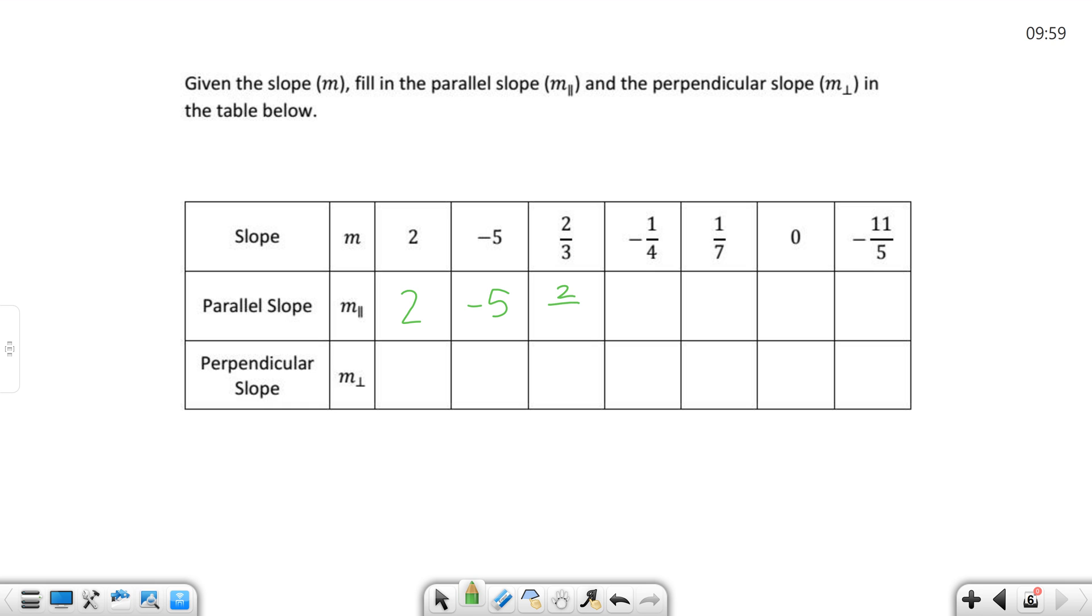What's the parallel slope to two-thirds? Two-thirds. What's the parallel slope to negative one-fourth? Negative one-fourth. If you don't see this yet, it's because you're looking way too hard. You're making this way more than it is. What is the parallel slope to one-seventh? One-seventh. What is the parallel slope to zero? Zero. What about negative eleven-fifths? Negative eleven-fifths. Parallel slope's the same, y'all. If you're given a slope and asked to find the parallel slope, same thing, just copy. Same thing.